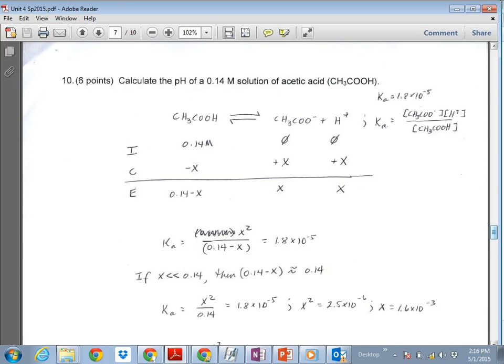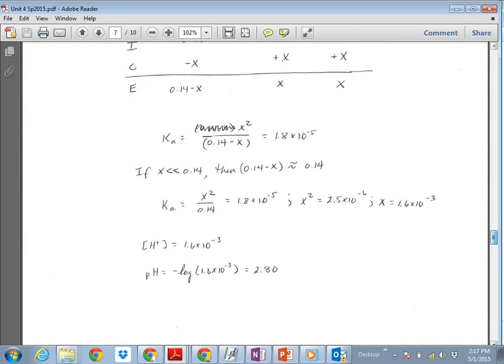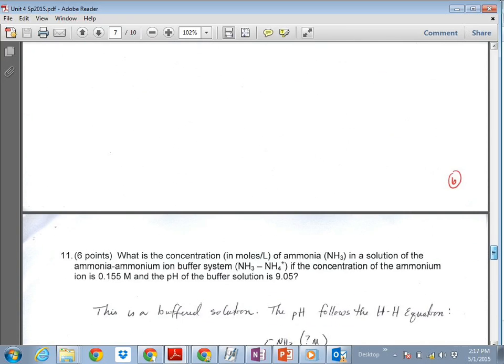So to get the pH, then, that's actually the hydrogen ion concentration. So we can do that next. pH would be negative log of that number.